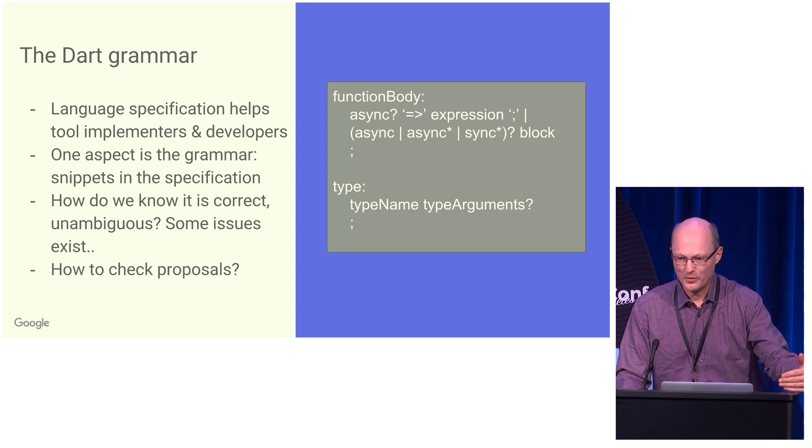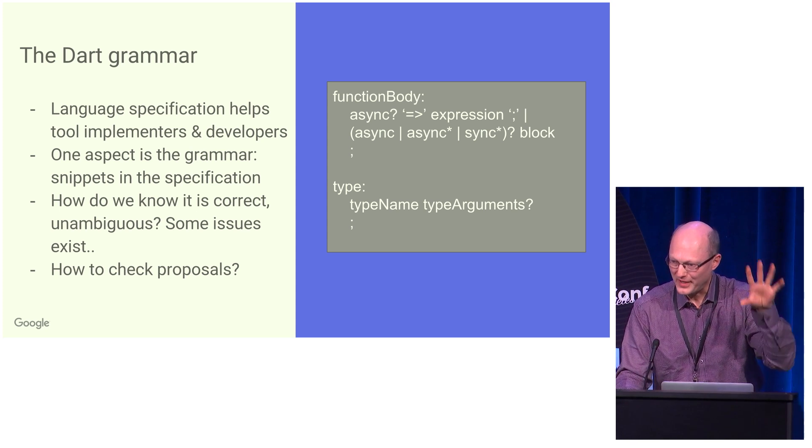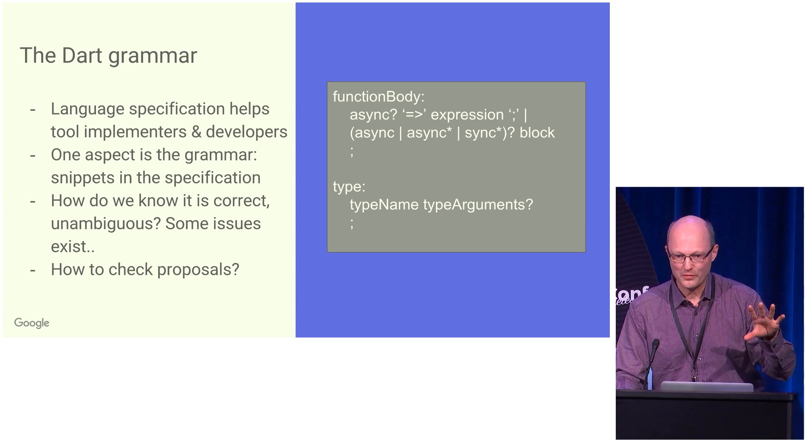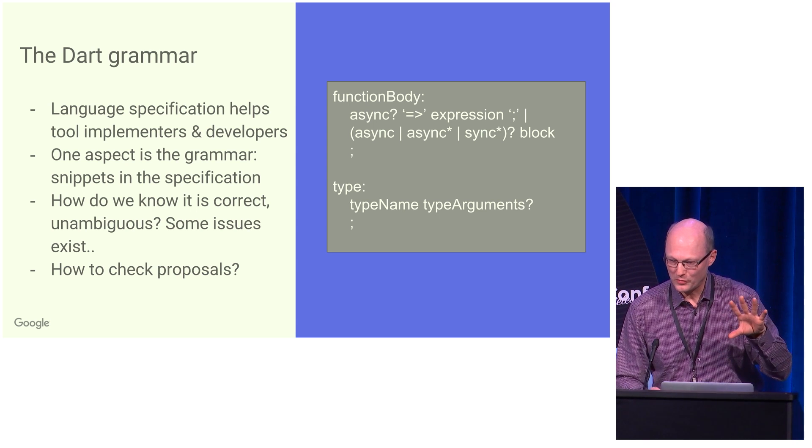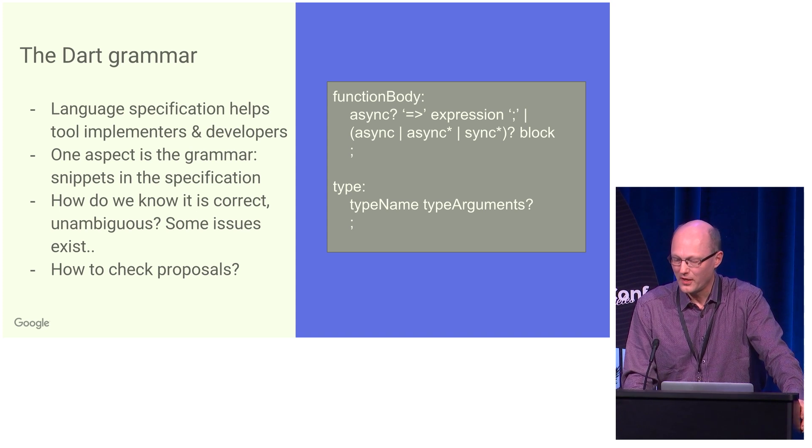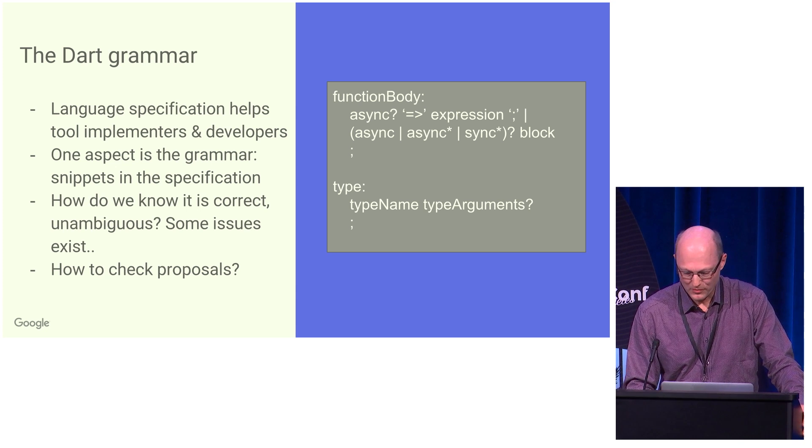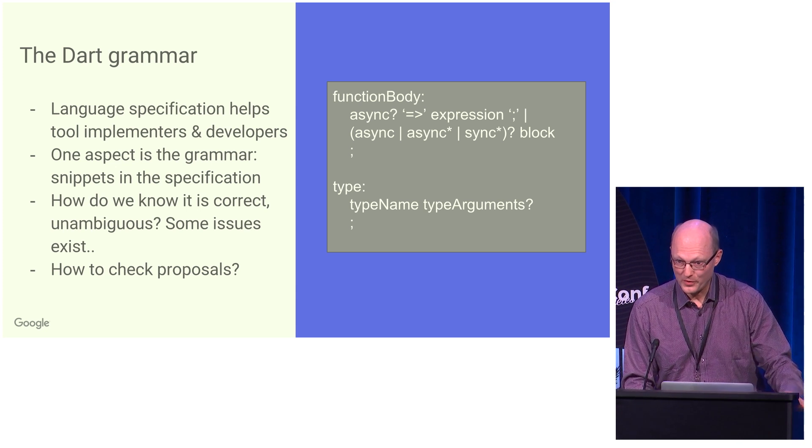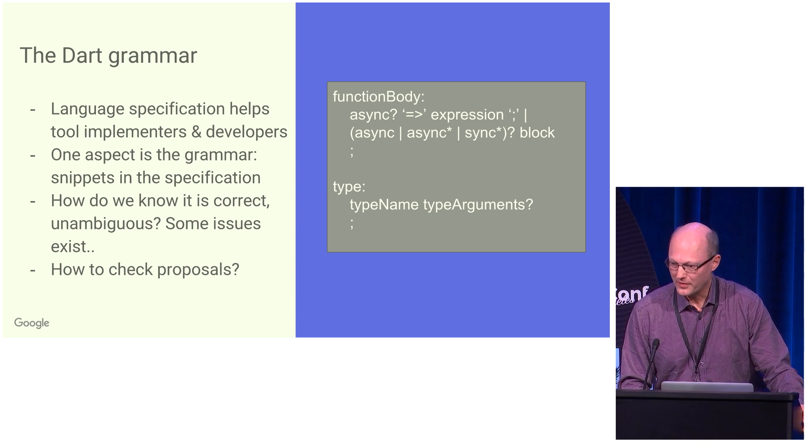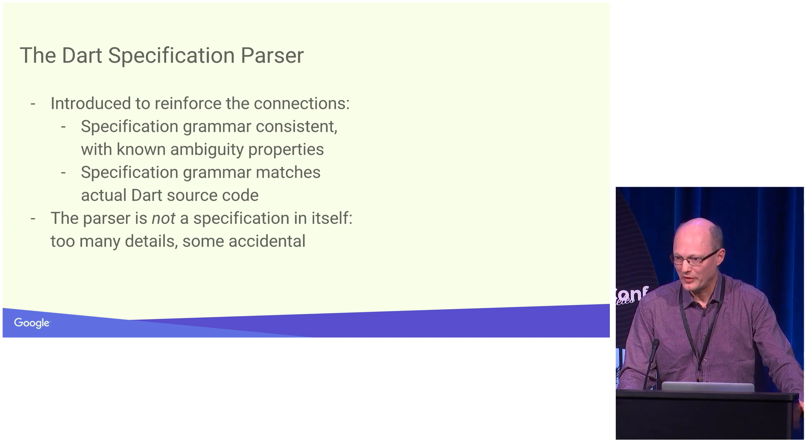So we had a need to make sure that the specification was actually correct. Instead of having textual snippets and letting everybody working on implementation rely on them 100 percent, we wanted direct feedback on the correctness of the grammar itself, the whole grammar. So I set out to create this specification parser which has a complete Dart grammar that we're going to use to feedback into the specification.